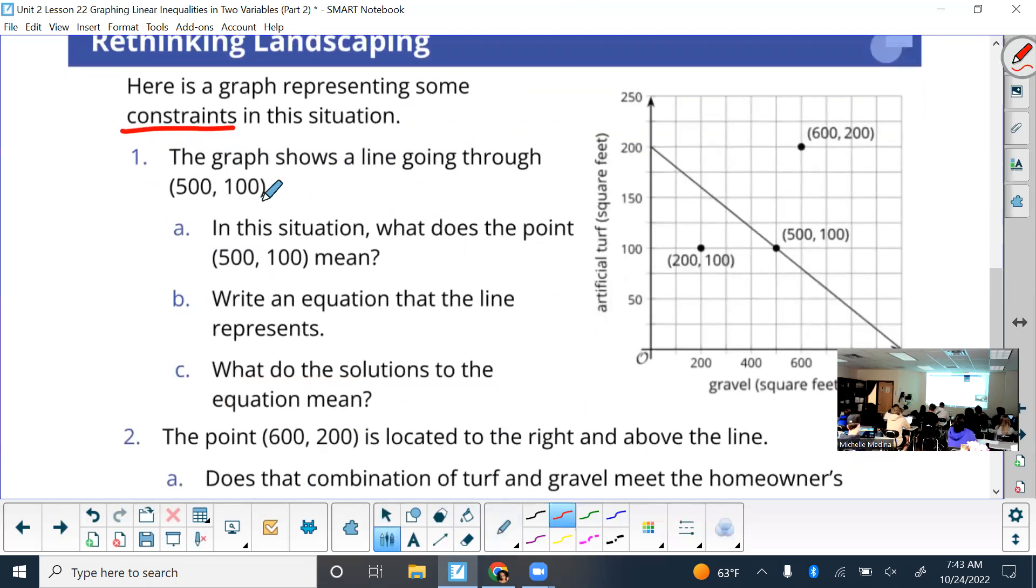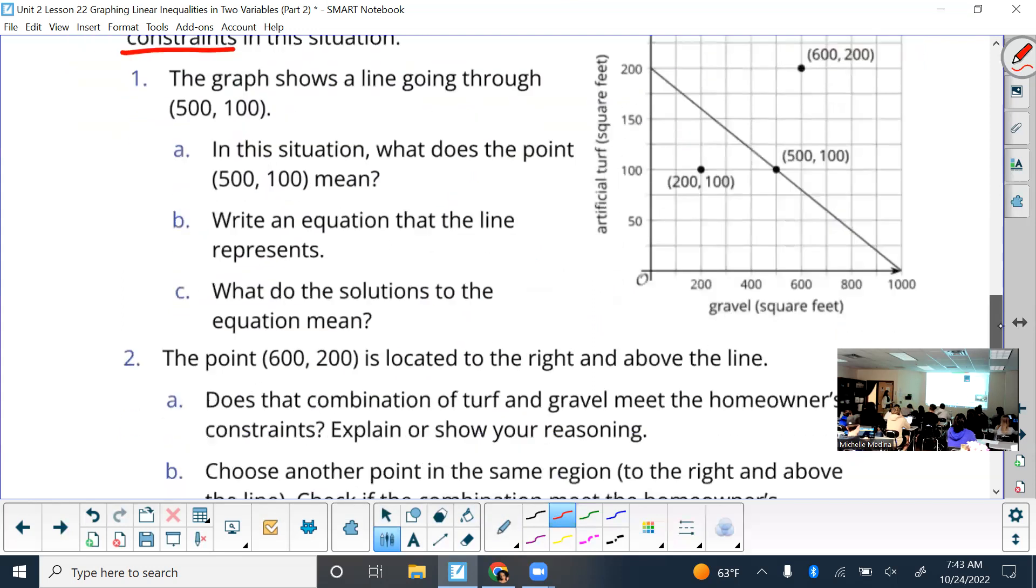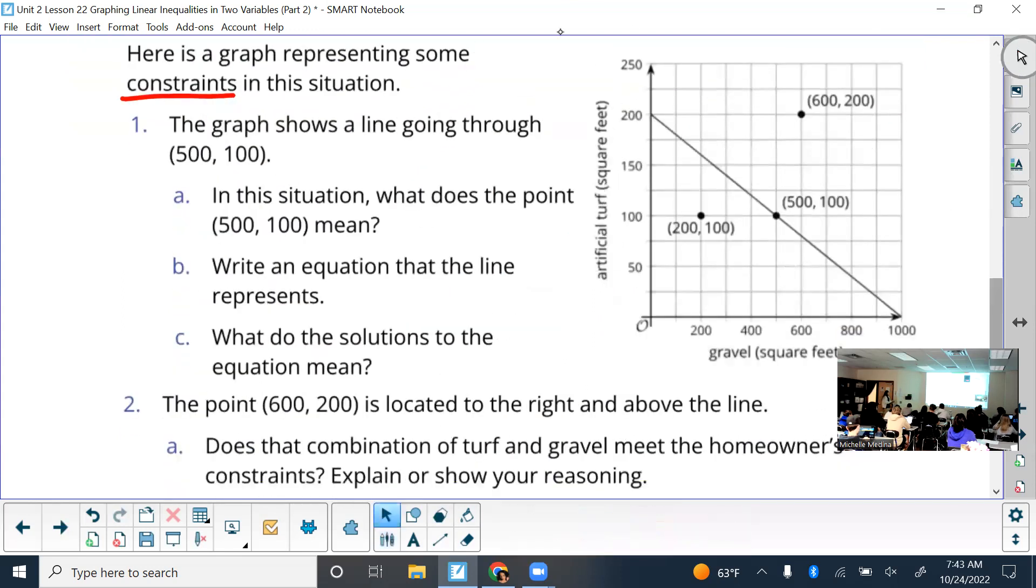Okay, so just letting you know what's going on. Here is the graph representing some constraints in the situation. What's another word for constraints? Things that hold you back essentially. So here's some limitations. Again, these all represent limitations. You just have to interpret what they need. This whole situation is. Right. Okay, so then just answer them first alone and then with your group if you get stuck. So in this situation, what would 500, 100 mean? Write an equation that the line represents. What do the solutions? And so, all right, I'll give you about five minutes.